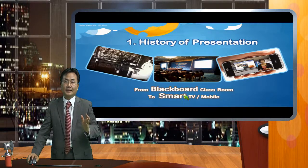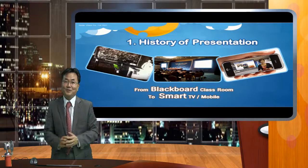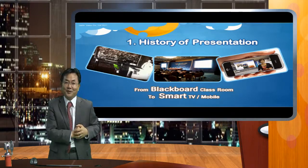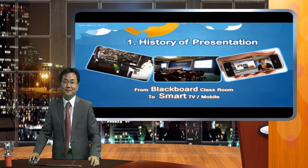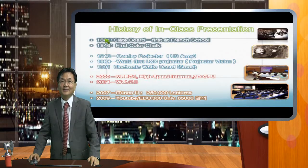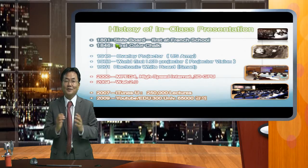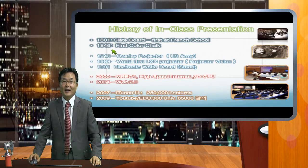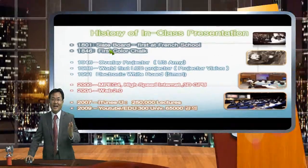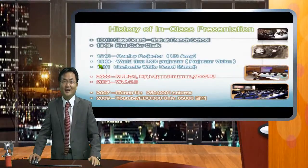The blackboard — a really black color board — has been used for a long time. From my investigation, in 1801, just 210 years ago, the world's first slate-based blackboard came out in the industry. Then in 1846, after about 45 years, the first industrial chalk and color chalk happened.